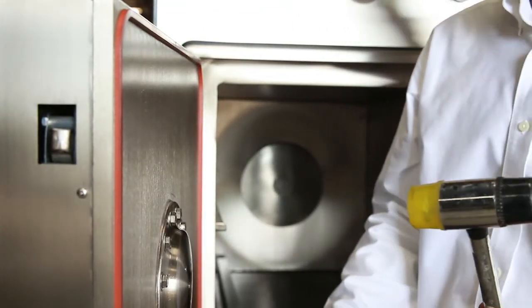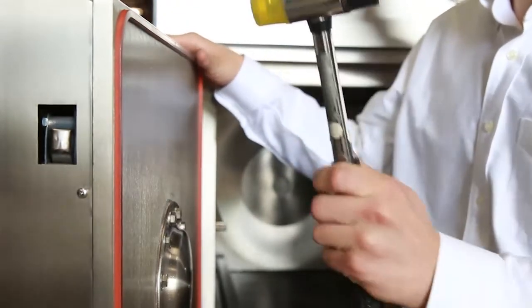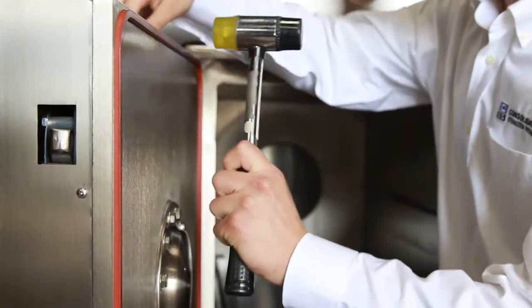Once the gasket is in, now we need to seat it evenly. Take a rubber mallet and press the gasket in firmly all the way around.